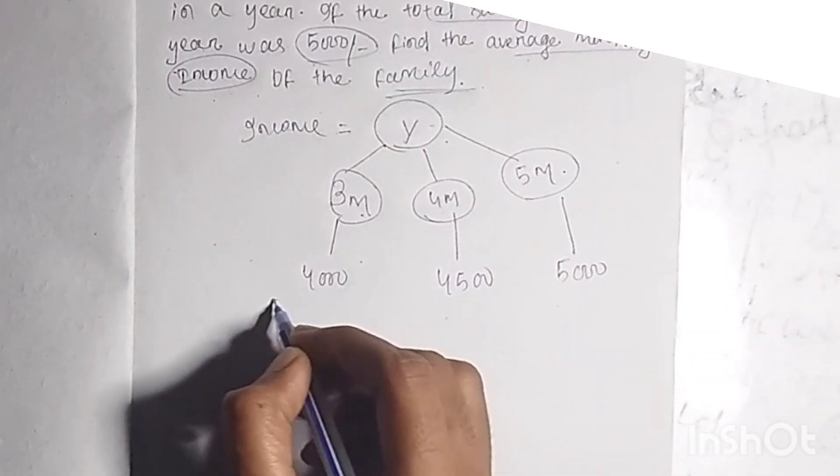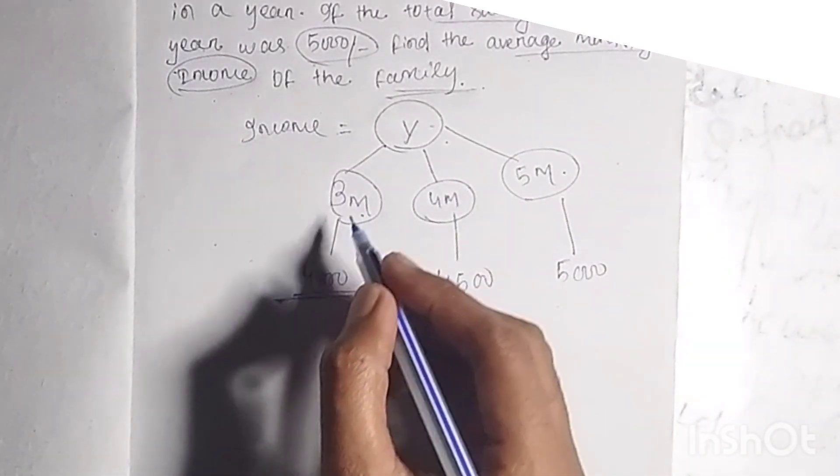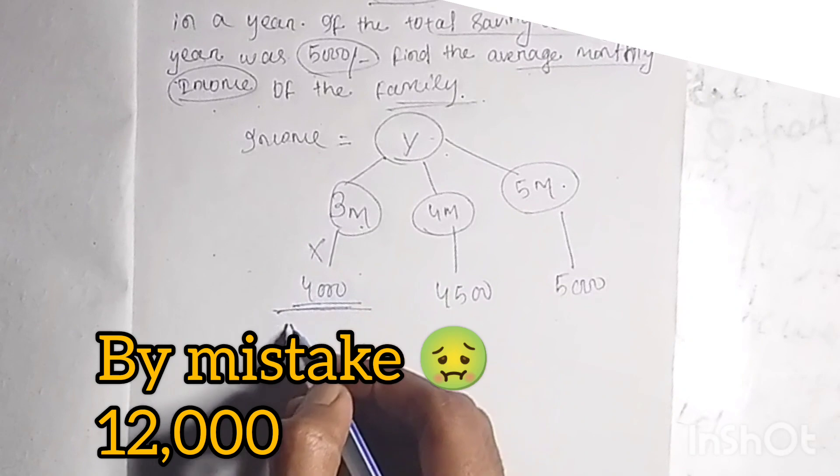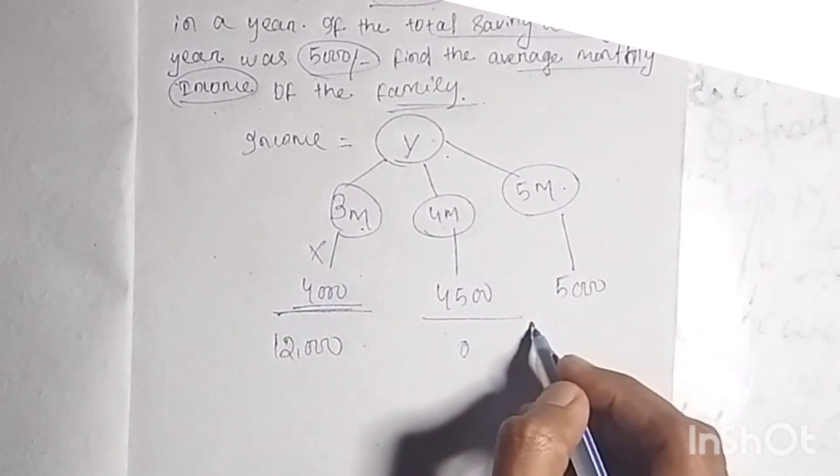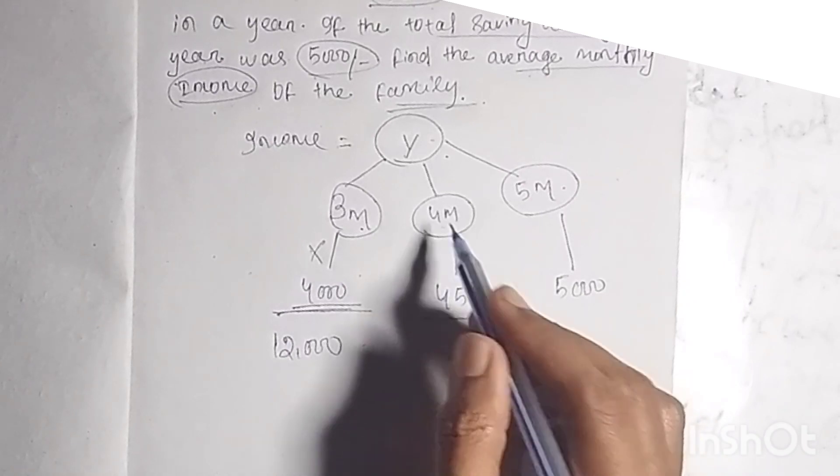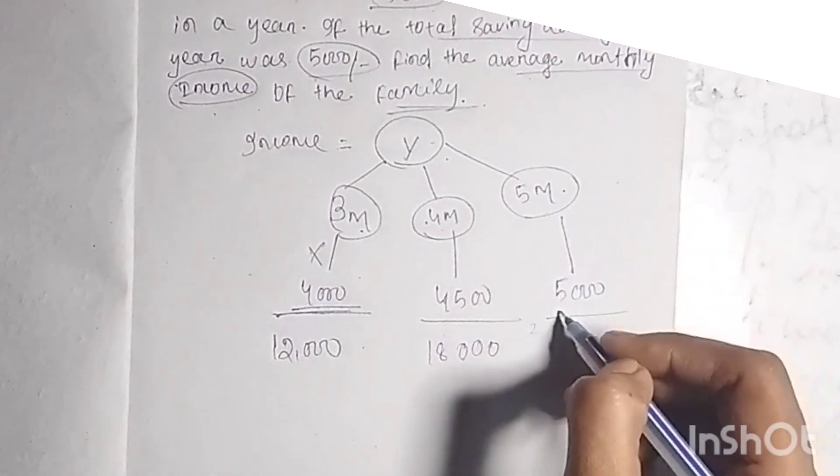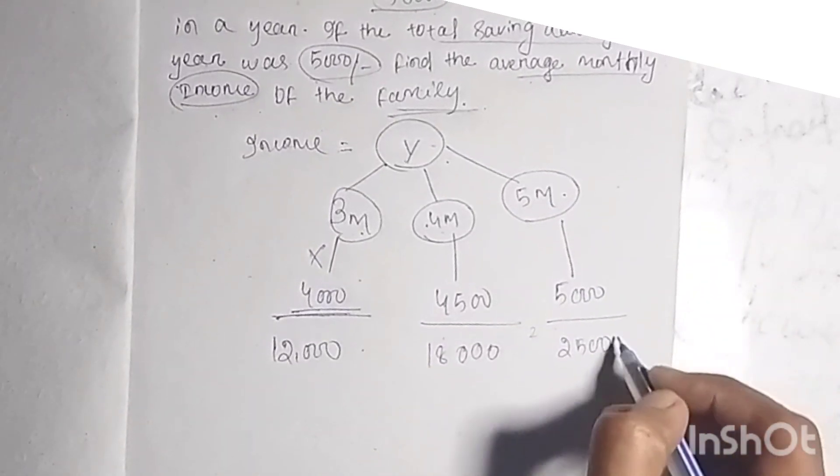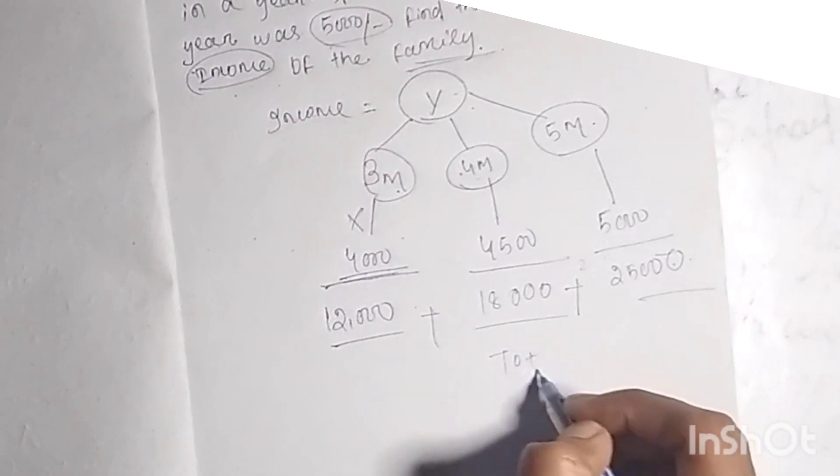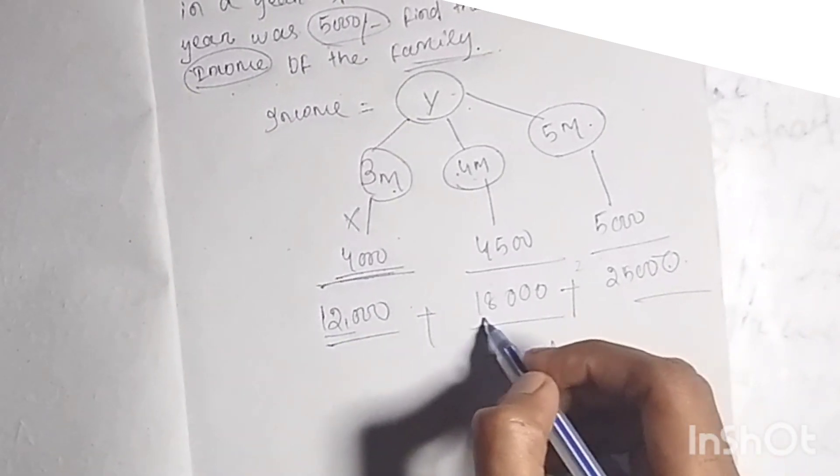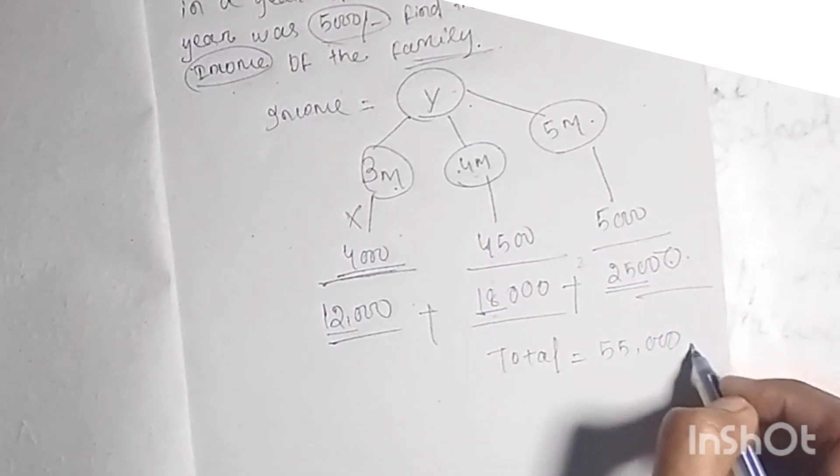To find the total expenditure, we multiply: 3 × 4,000 = 12,000, then 4 × 4,500 = 18,000, and 5 × 5,000 = 25,000. Let's add these up. The total would be 12 + 18 = 30, plus 25 = 55,000.